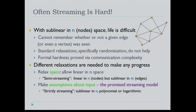We need to relax some constraints. One relaxation done previously is called semi-streaming: getting sublinear in M (the number of edges) but still linear in N (the number of vertices). That's a nice theoretical result, but the nodes in these big networks number around 10^9, so linear in N is still not good enough. We need ideas from practice: make assumptions about the input — real-world assumptions — and call this the promised streaming model.